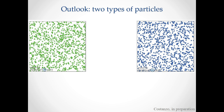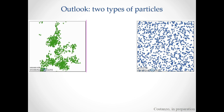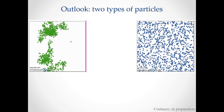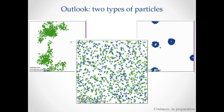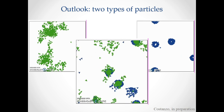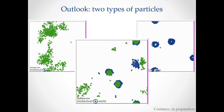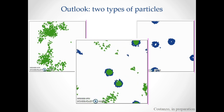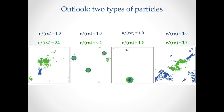Now consider two types of particles: one type which is too slow in order to get milling — so it is flocking — and one other type which has the right set of parameter values in order to get milling. What happens if we put them together in the same box? Will they all mill together, will nobody mill, will they segregate? Running the simulation in this particular case, we see that actually the milling particles are still milling, and they have kind of induced this rotational motion to the non-milling particles.